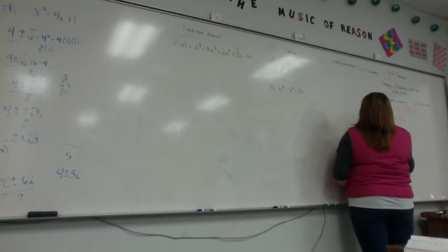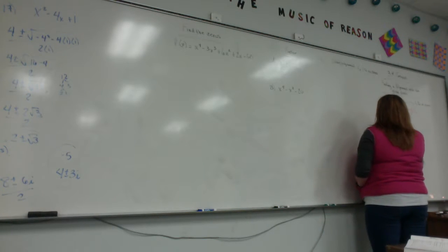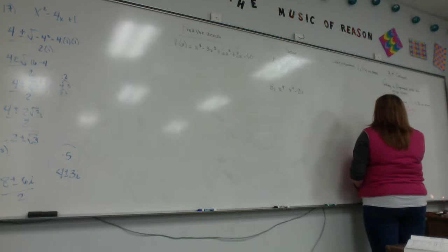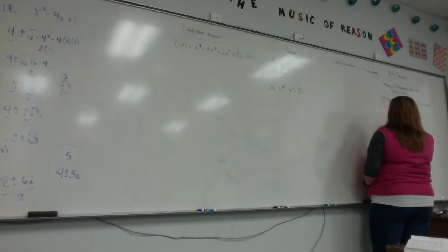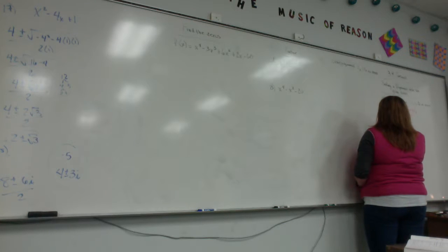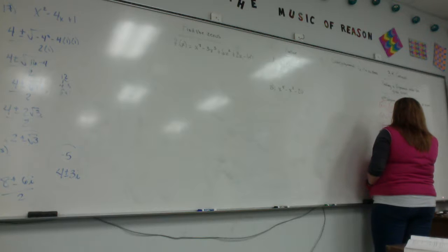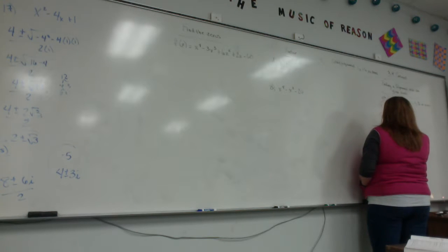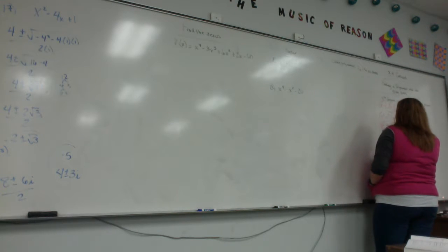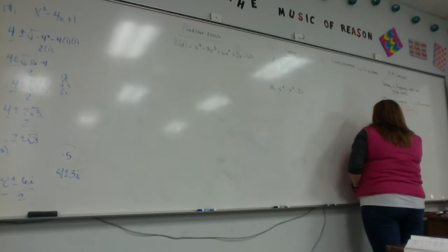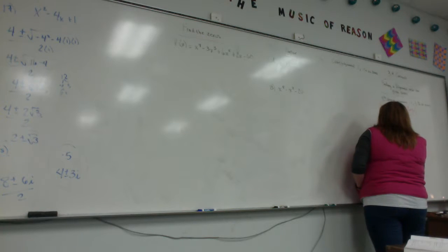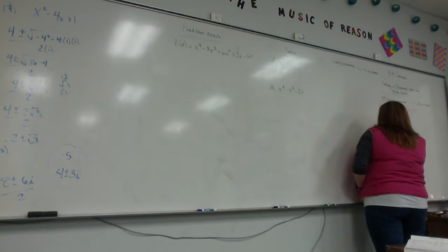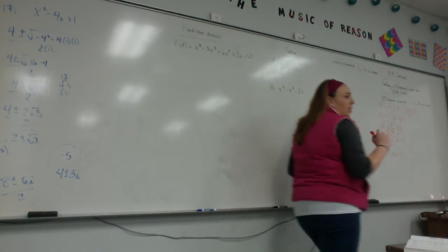Now I'm going to FOIL this, and this time I've got to do it all the way. x squared times x squared is x to the 4th. I have x squared plus 9, so 9x squared. I have negative 1 times x squared, so minus x squared. And then negative 1 times 9, so minus 9. I combine like terms and I get x to the 4th plus 8x squared minus 9. And that is what they're looking for as your solution.